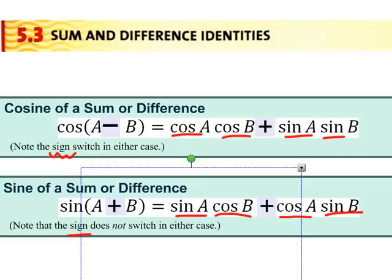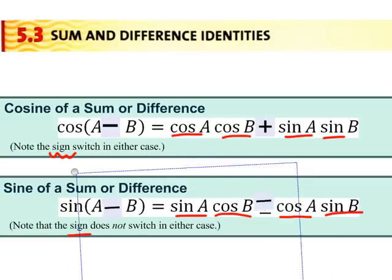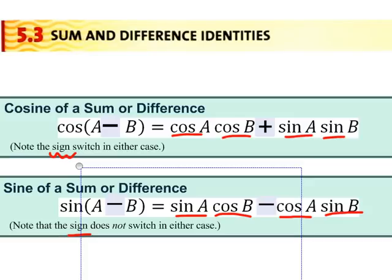And if that plus becomes a minus on the left, it also becomes a minus on the right. So we really have a total of four formulas up on the screen right now. These are our sine and cosine sum and difference formulas. So let's see how it works.